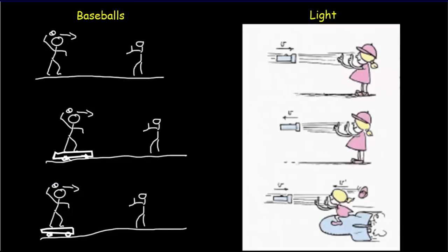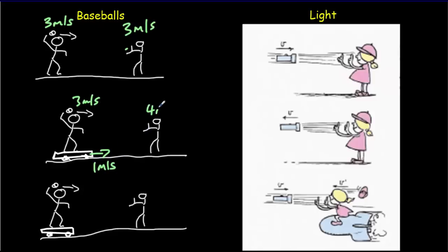It doesn't always immediately sink in how bizarre it is that all observers measure the same speed for light regardless of their motion. Consider a baseball pitcher who always throws at 3 m/s. A stationary catcher measures 3 m/s. But if the pitcher is on a skateboard moving at 1 m/s toward the catcher, the catch is made at 4 m/s — adding the skateboard's motion to the throw. If the skateboard moves backward at 1 m/s, the catch is at 2 m/s. All well and good with baseballs.